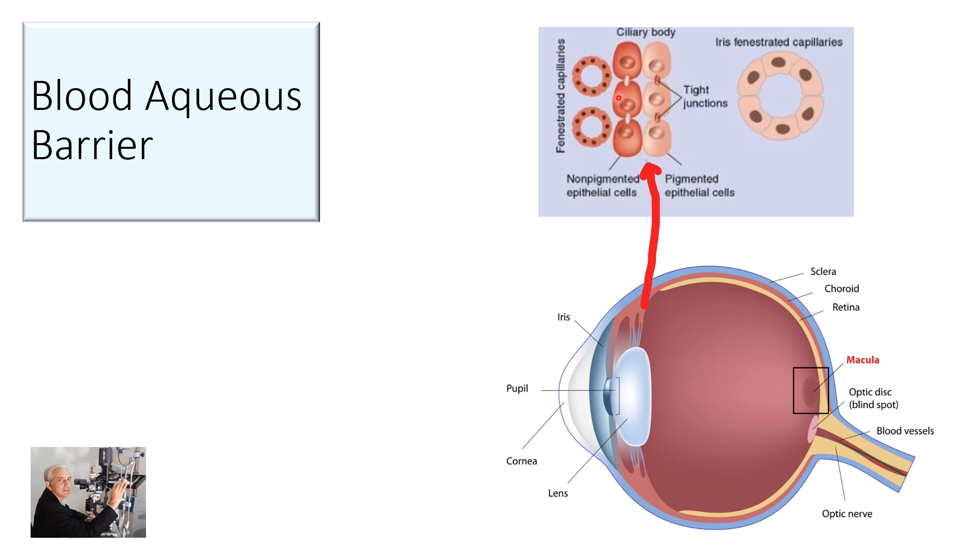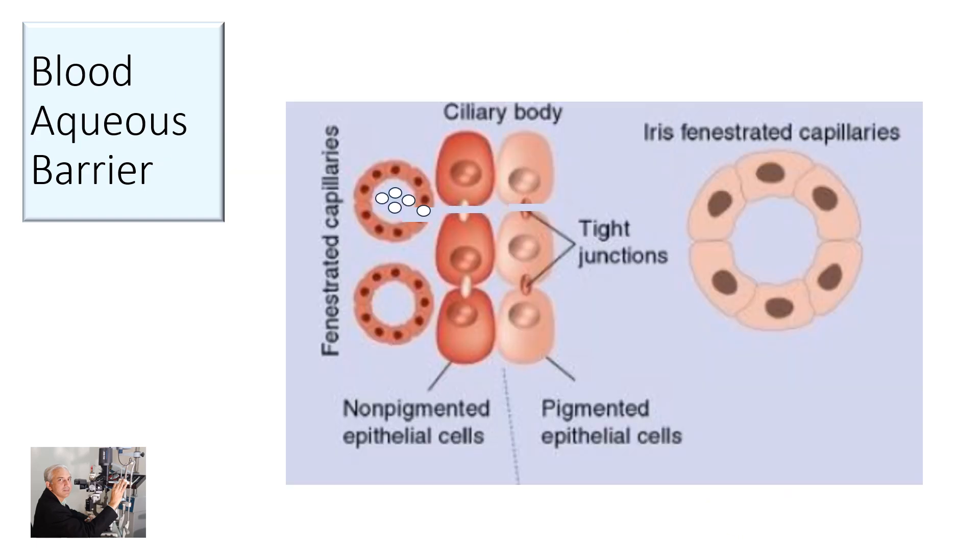What happens if you break these tight junctions in the pigmented and non-pigmented epithelium and the tight junctions in the capillaries? If we have white blood cells going through these blood vessels and we break this barrier, the tight junctions which happens in anterior uveitis, these cells will move into the anterior chamber. That is why we see cells and also proteins. The cells will show up as cells but the proteins will show up as flare or that scattering of light.